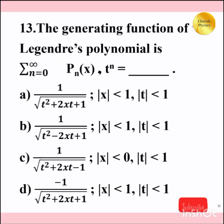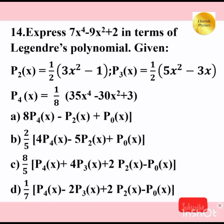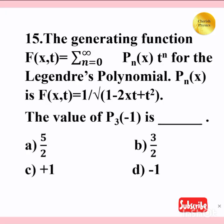The generating function of the Legendre's polynomial is: the sum from n=0 to infinity of Pn(x)·tⁿ equals 1 divided by the square root of (1 minus 2xt plus t²).